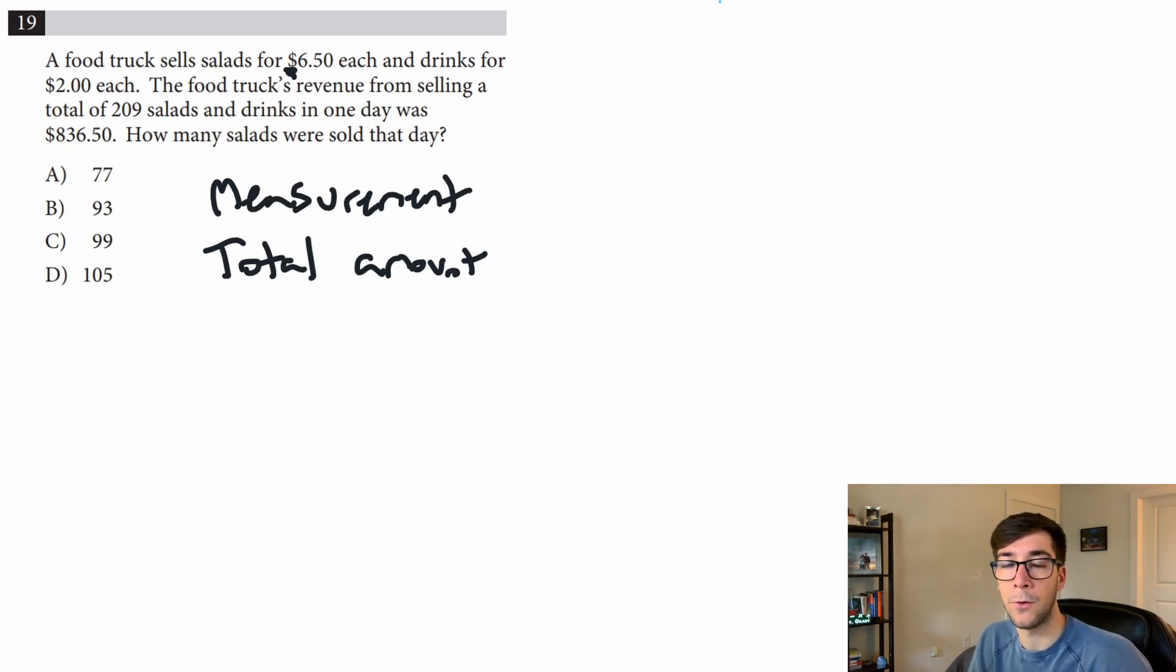I like to start with the total amount equation. Even though this one's simpler, it can often be trickier to figure out, so if we get this right off the bat, the other equation will be easier. So total amount, it said we sold 209 salads and drinks, so s + d = 209.